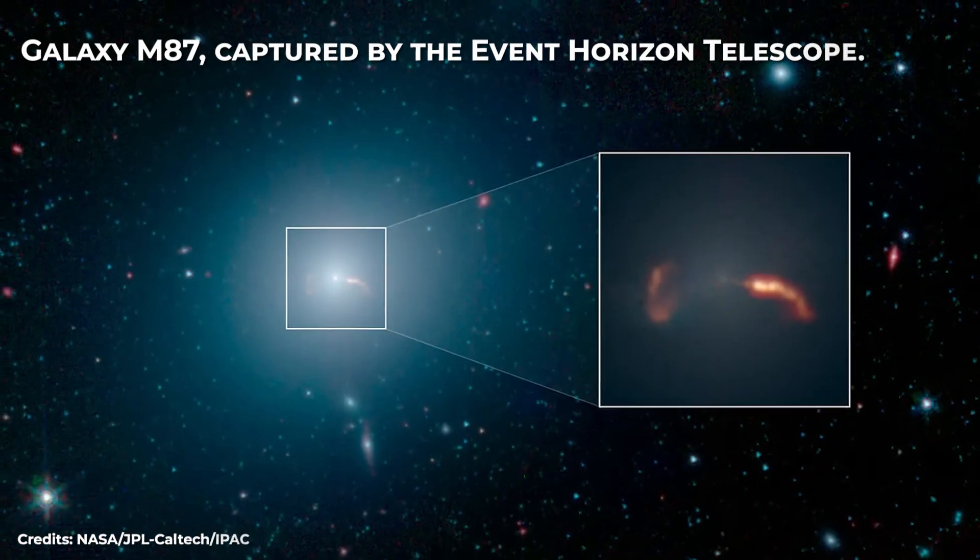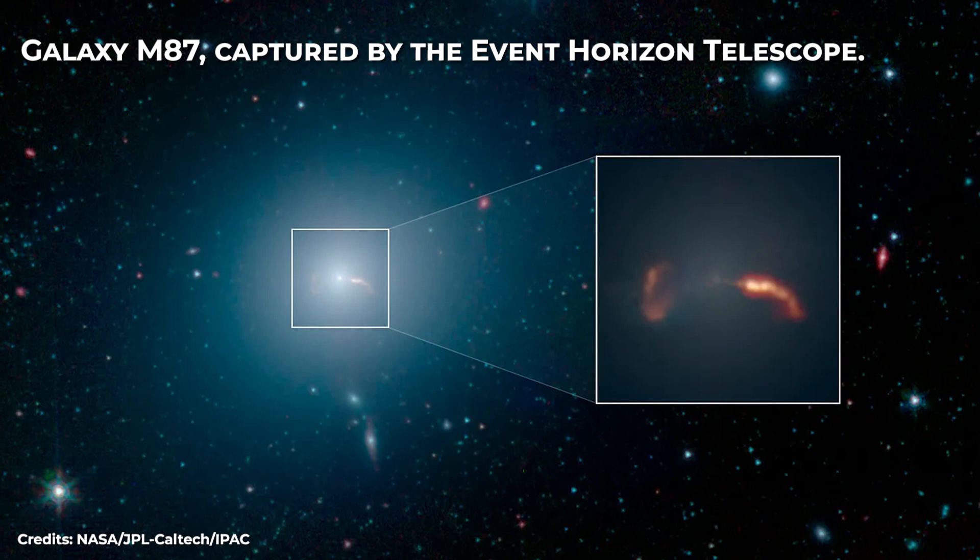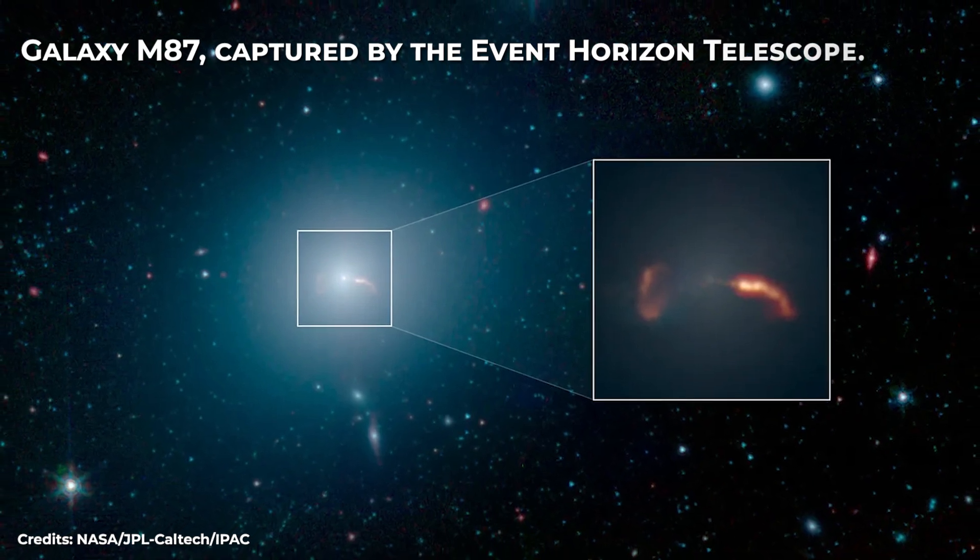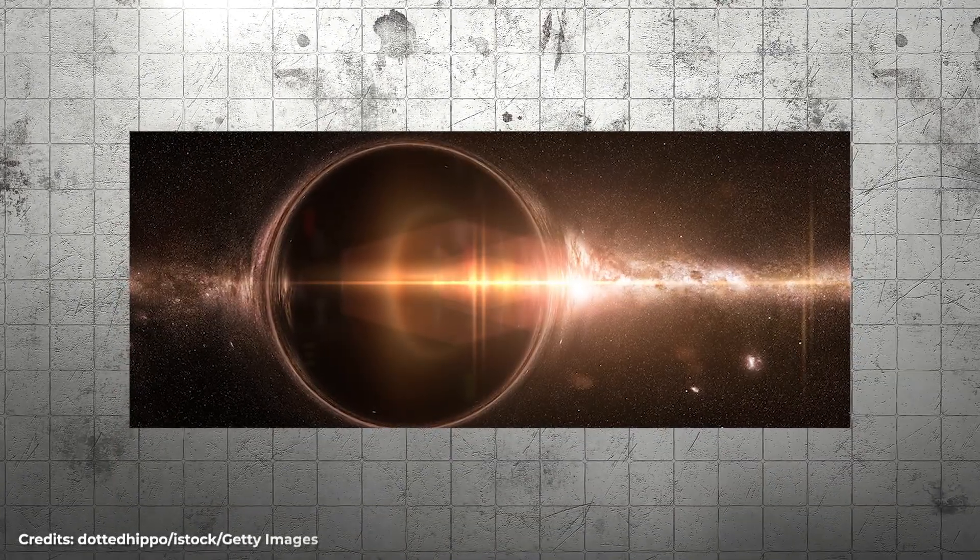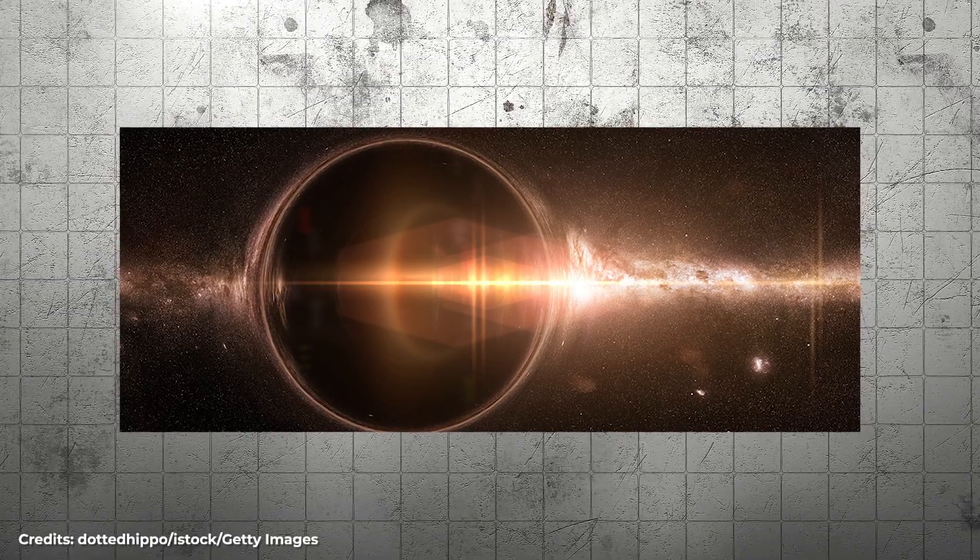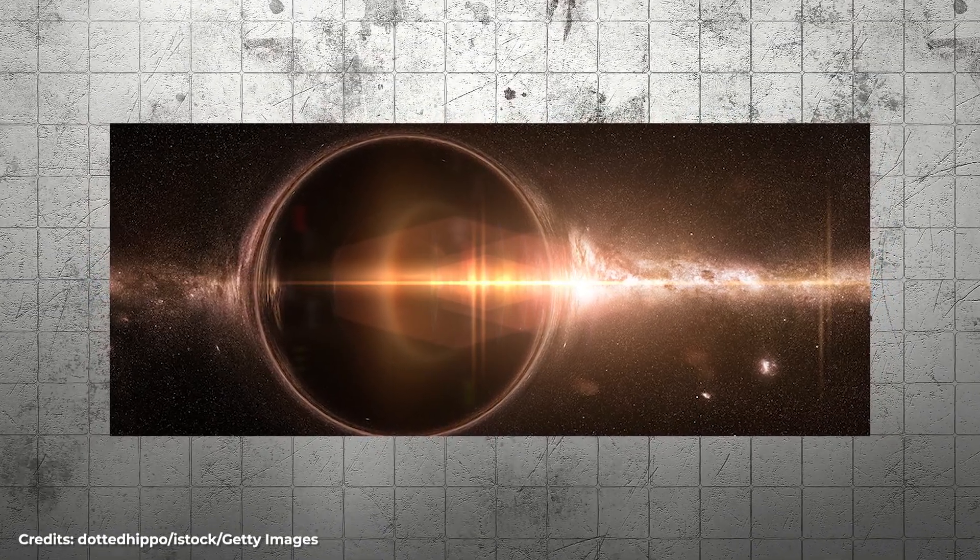Consider the famous image of the black hole in galaxy M87, captured by the Event Horizon Telescope. This groundbreaking image gives us a real-world glimpse of an event horizon and helps us visualize where Hawking radiation might be emitted.